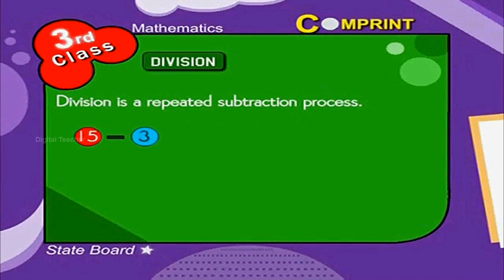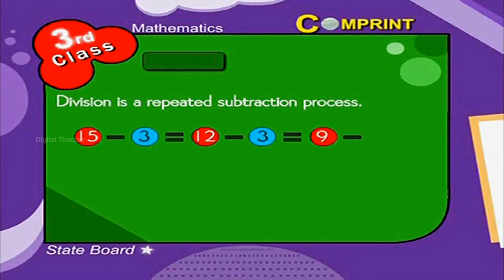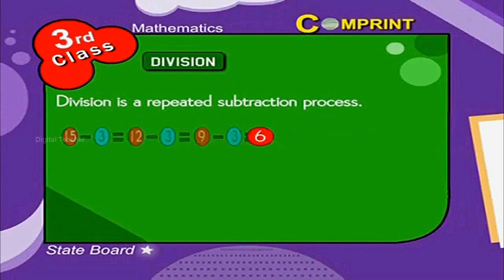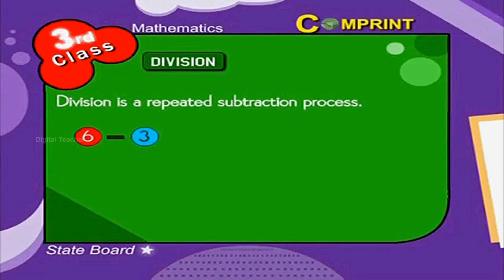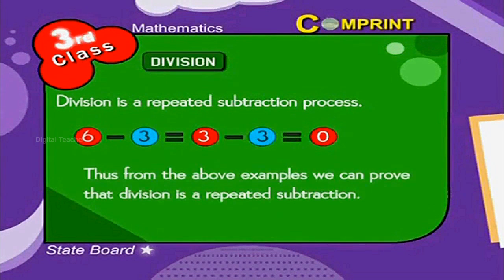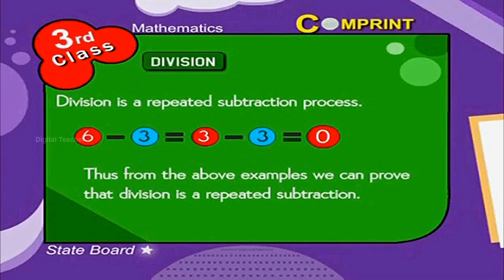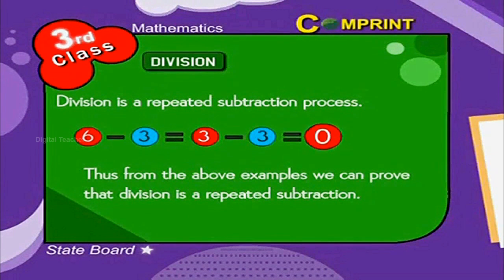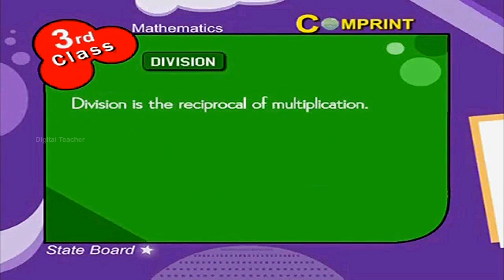15 minus 3 is equal to 12. Minus 3 is equal to 9. Minus 3 is equal to 6. Minus 3 is equal to 3. Minus 3 is equal to 0. Thus, from the above examples, we can prove that division is a repeated subtraction. Division is the reciprocal of multiplication.